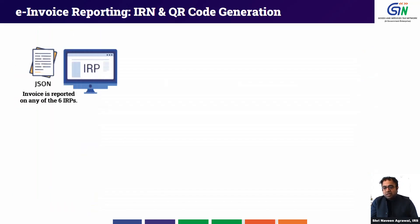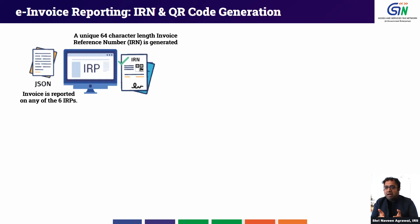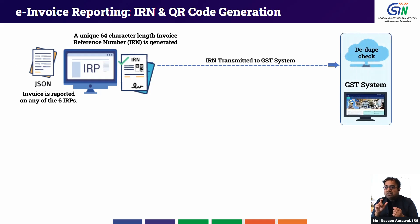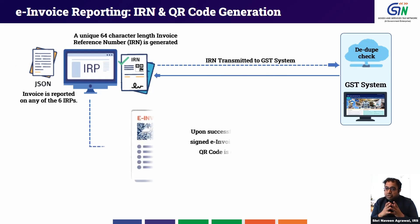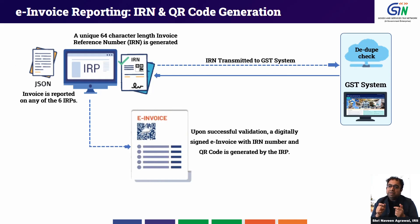Let's get started. As a taxpayer, you continue to generate your e-invoice in a given format using your existing ERP software, and then you are required to report that e-invoice in any of the six IRP portals. Once you report it, the IRP portal gives a unique e-invoice reference number and transmits that IRN to the GST system to check for deduplication. If the GST system confirms the IRN is unique, the IRP issues an e-invoice with a unique 64-digit IRN number.